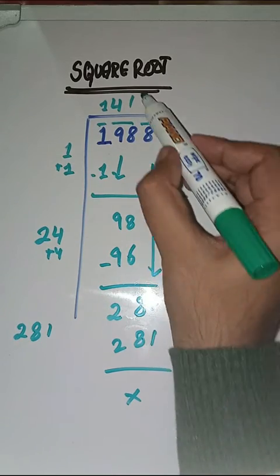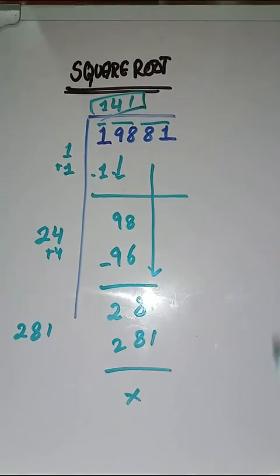So, square root of 19,881 is 141. Hopefully, you liked this video fairly. Please like, share and subscribe my YouTube channel. Thank you.